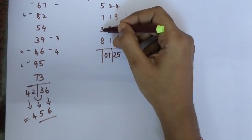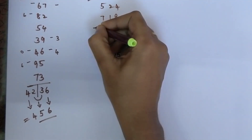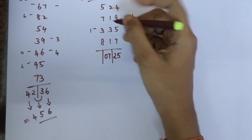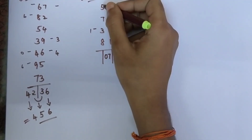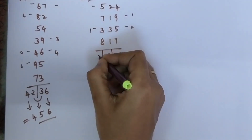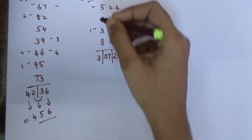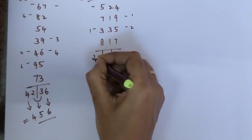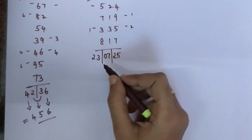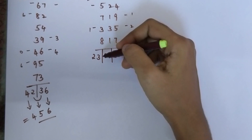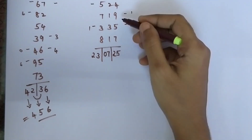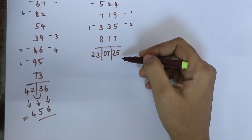Now for the next column: 8 plus 3 is 11, 1 plus 7 is 8, 8 plus 5 is 13. There are 2 bars, so I get 23. That is the result I got by adding all these single-digit numbers.